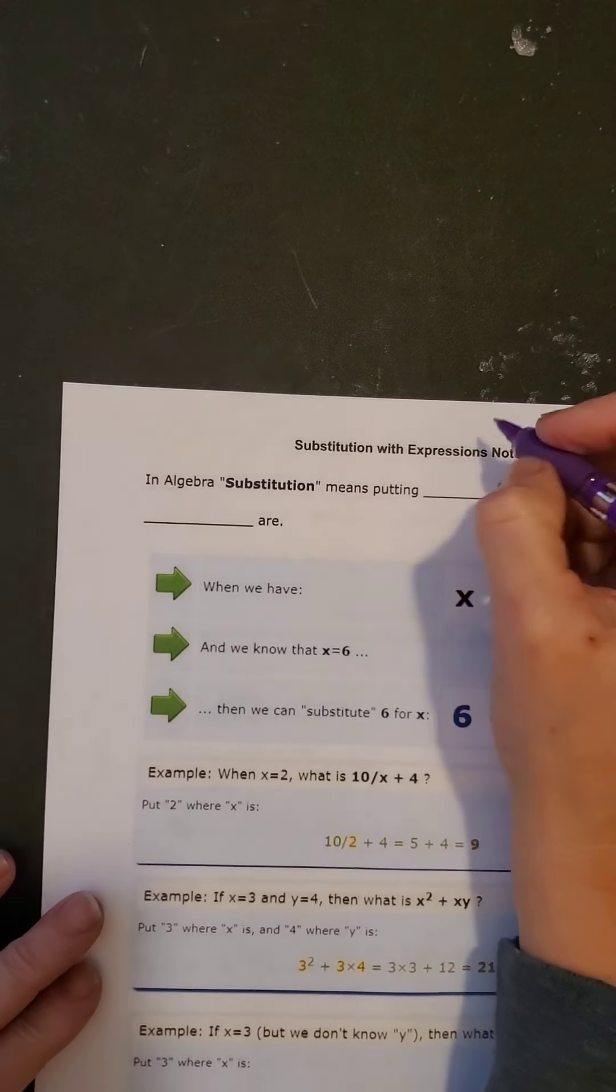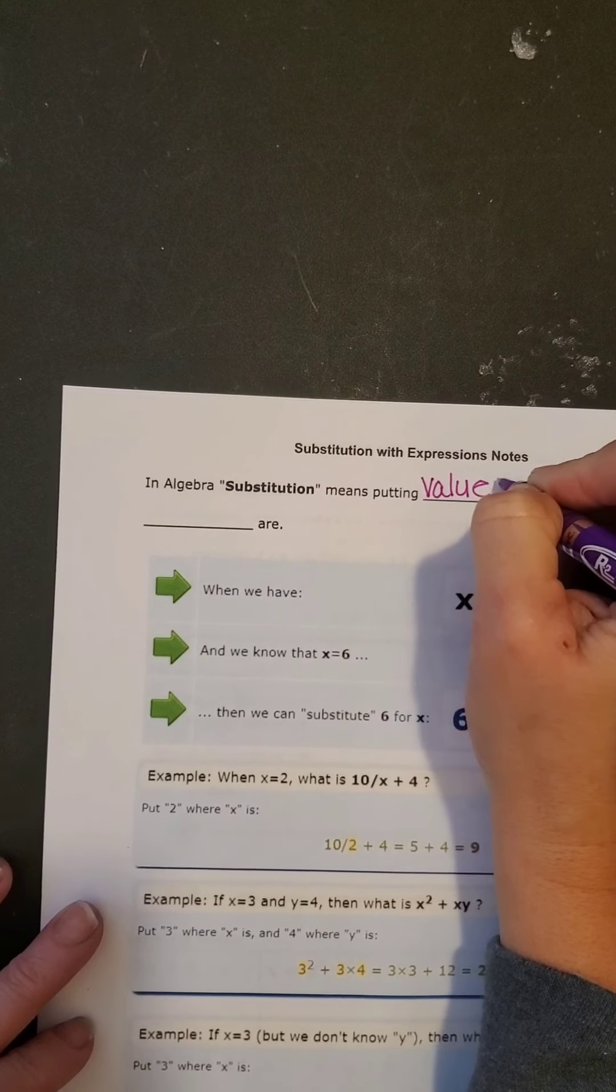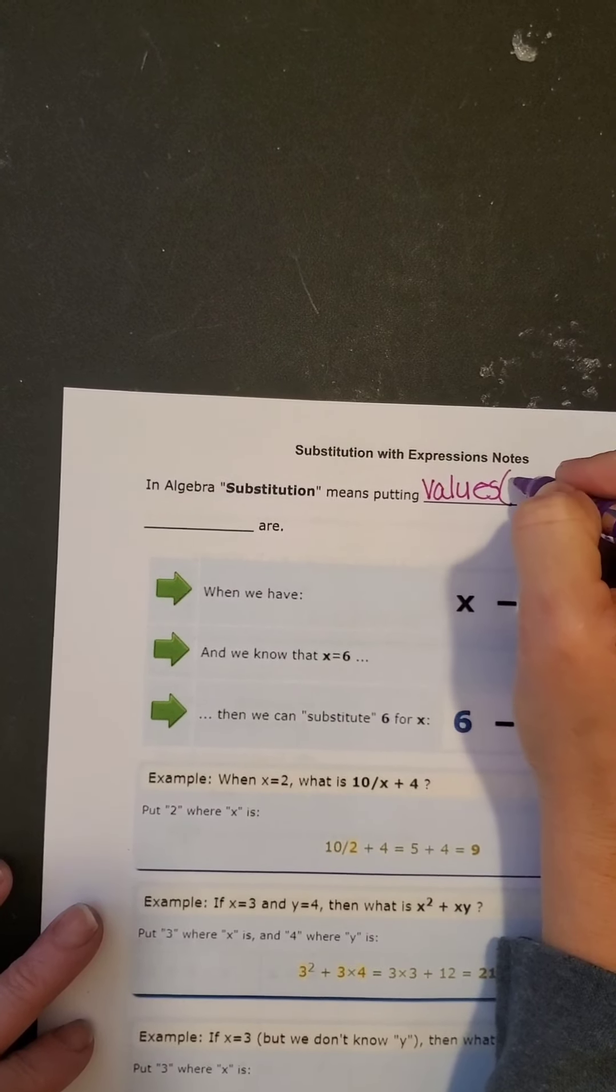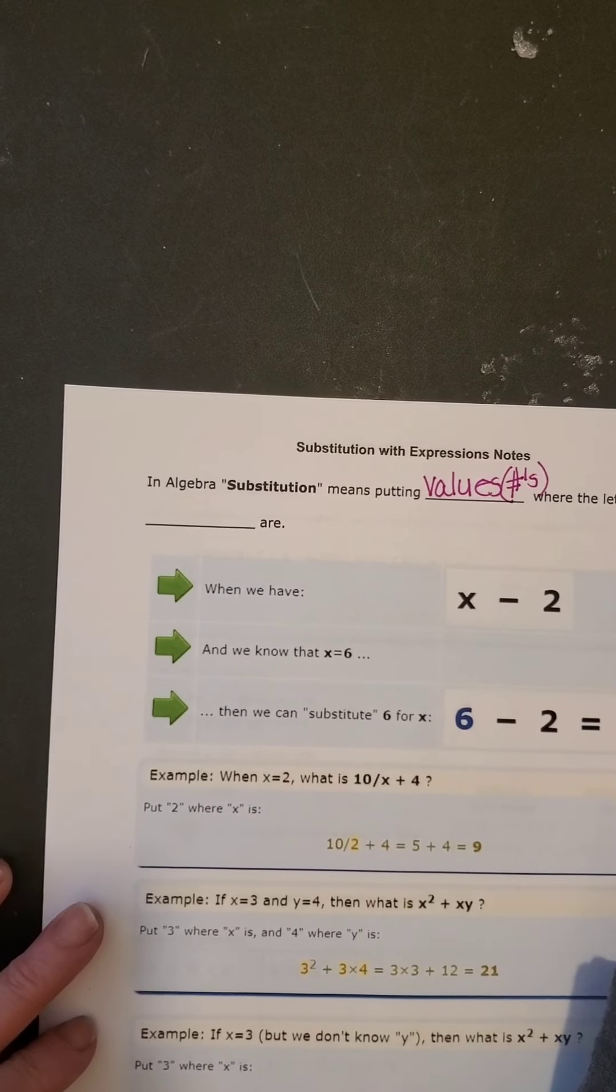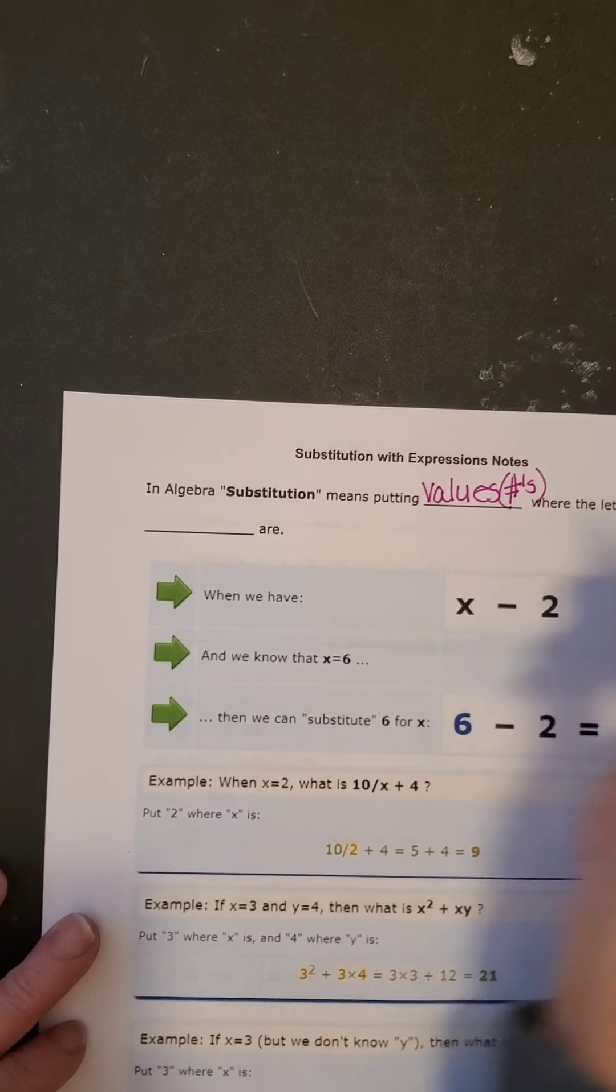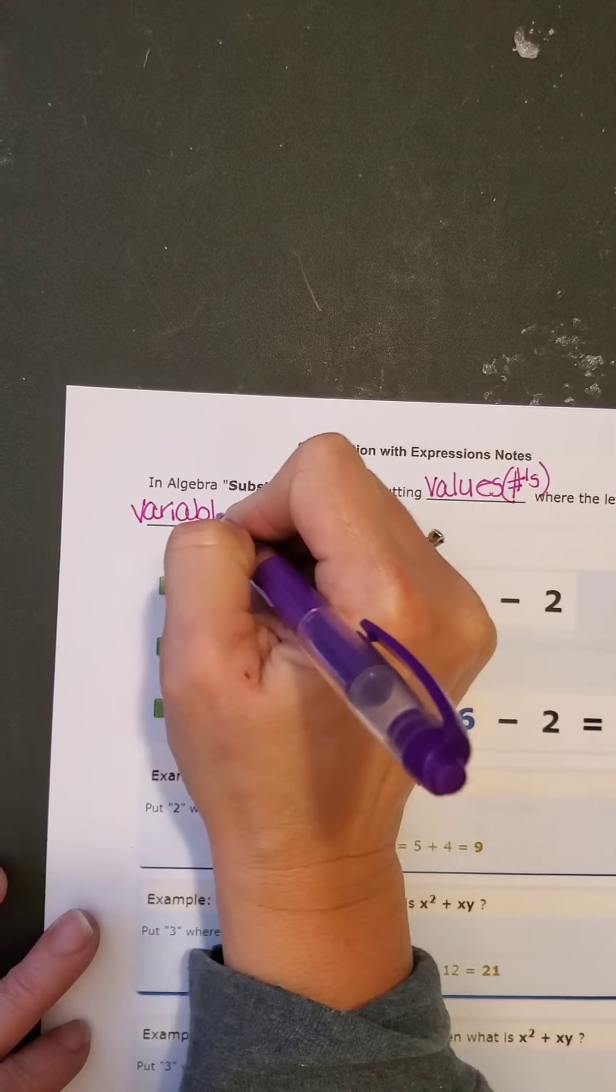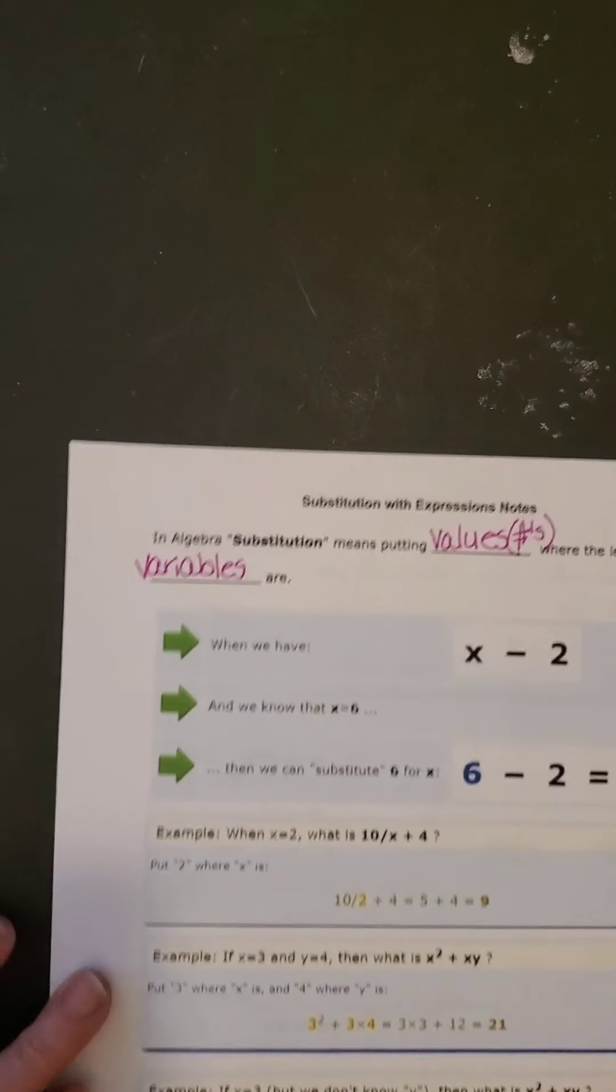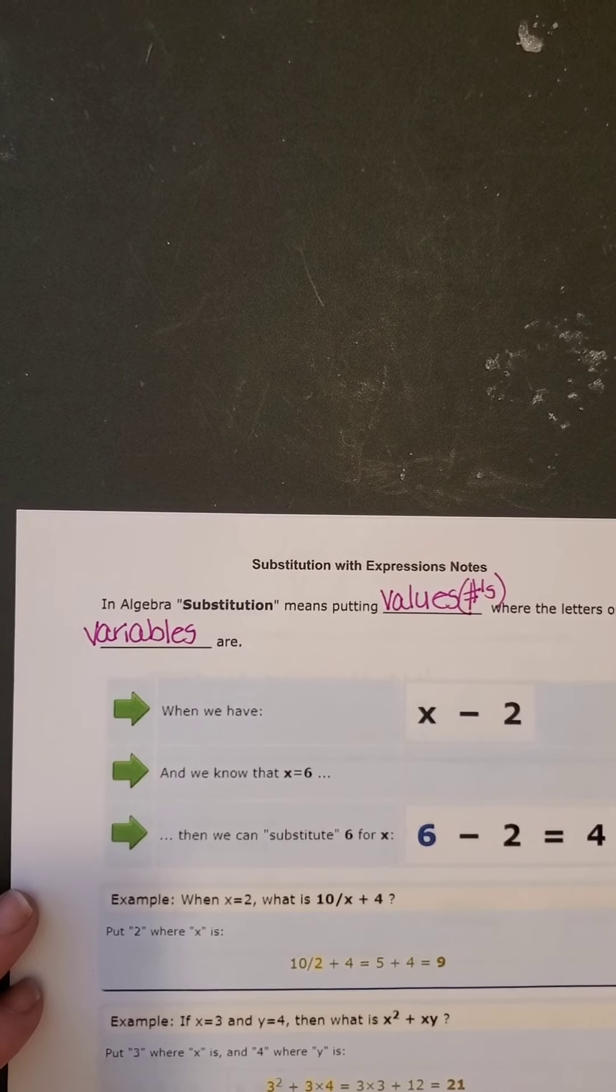So we are putting values. Values could also just be numbers where the letters or variables are. So putting values where the variables are.